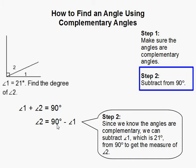So 90 minus angle 1 will give me the measure of angle 2. So 90 minus 21 is the measure of angle 2.